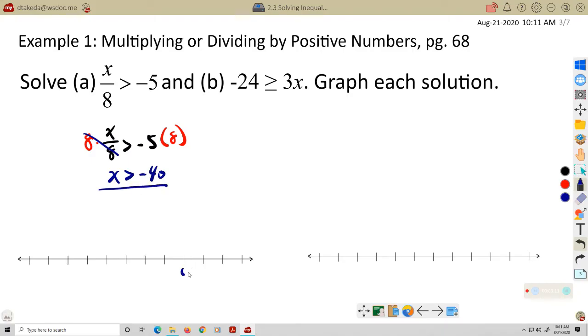So 0, negative 10, 20, 30, 40, negative 40. Open circle. And we're graphing to the right. We want numbers that are greater than negative 40.